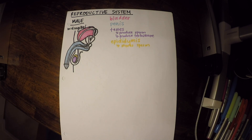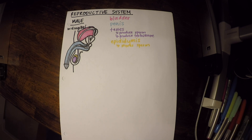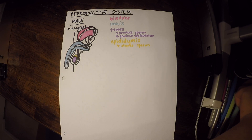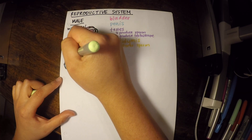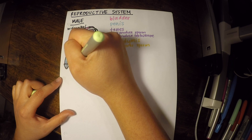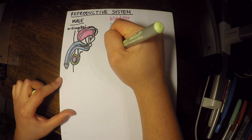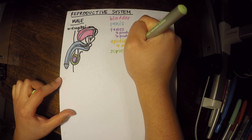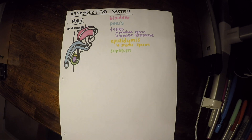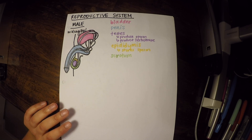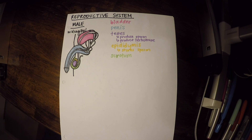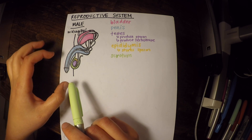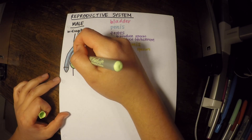The surrounding area around the testes is called the scrotum. The reason why the testes are outside or separated from the body is because it helps maintain a cooler temperature — about two to three degrees cooler — which facilitates the production of sperm. That's why in colder weather or cold water, muscles will pull the scrotum up to bring it closer to the body.